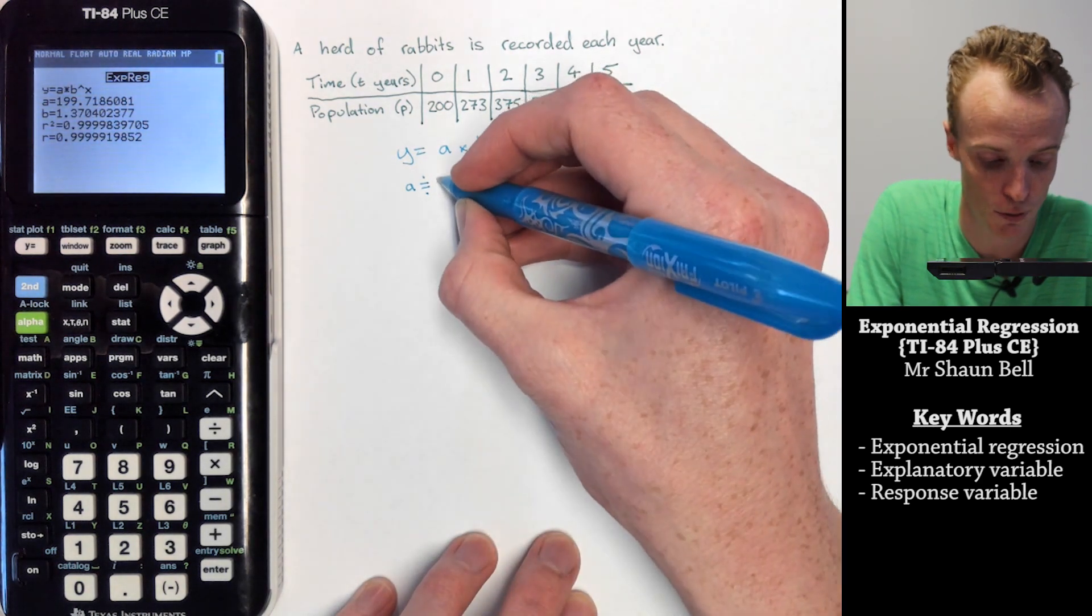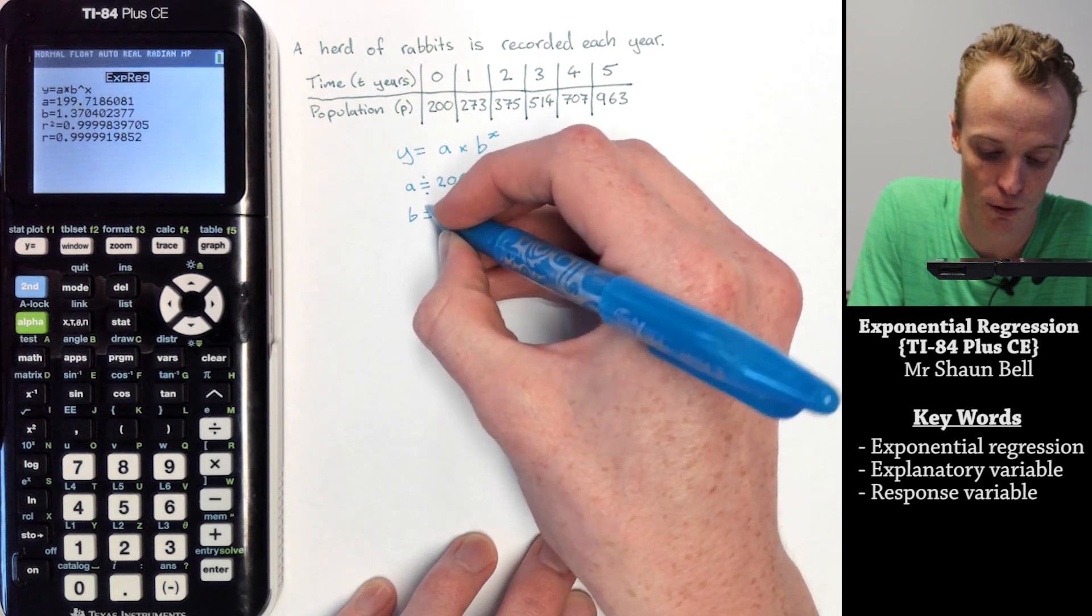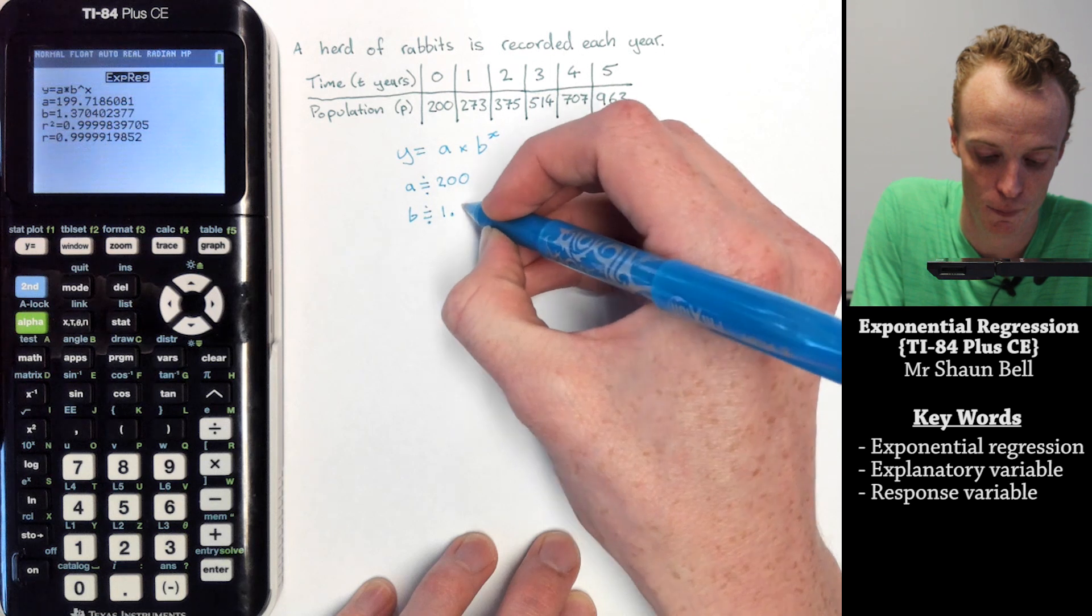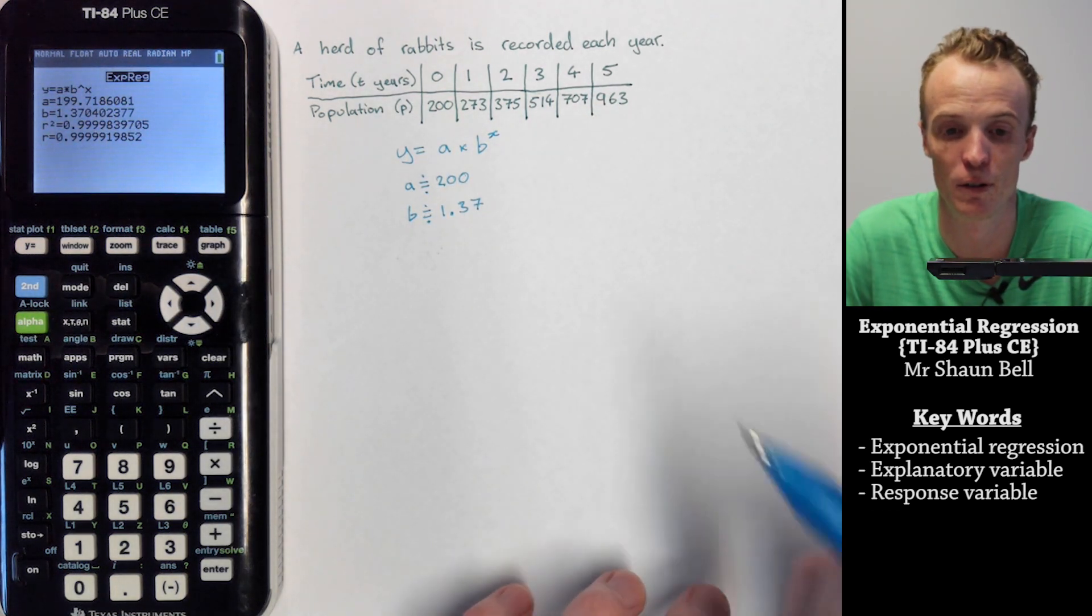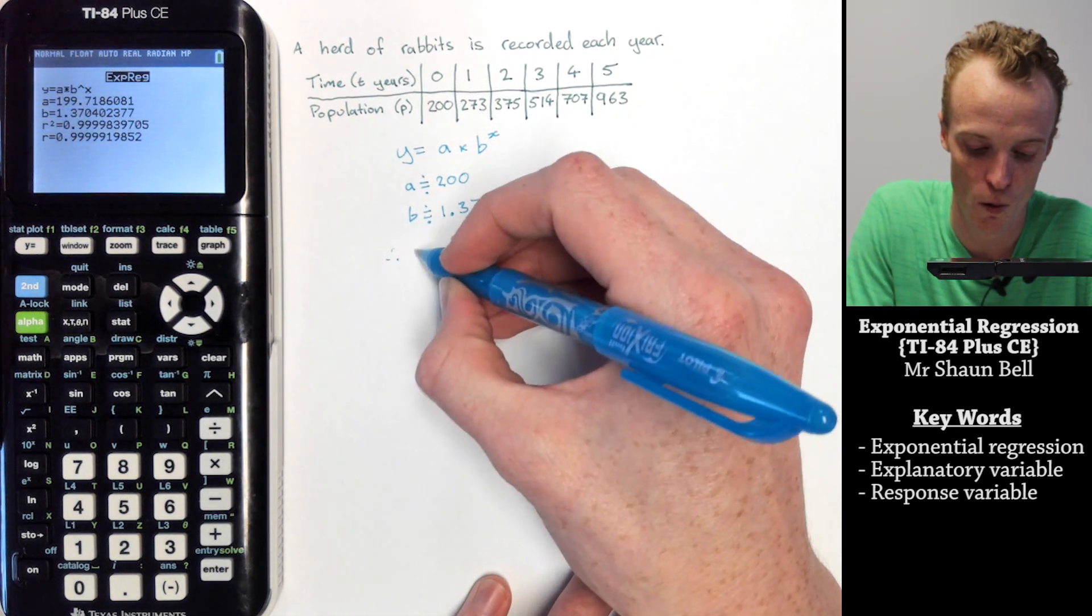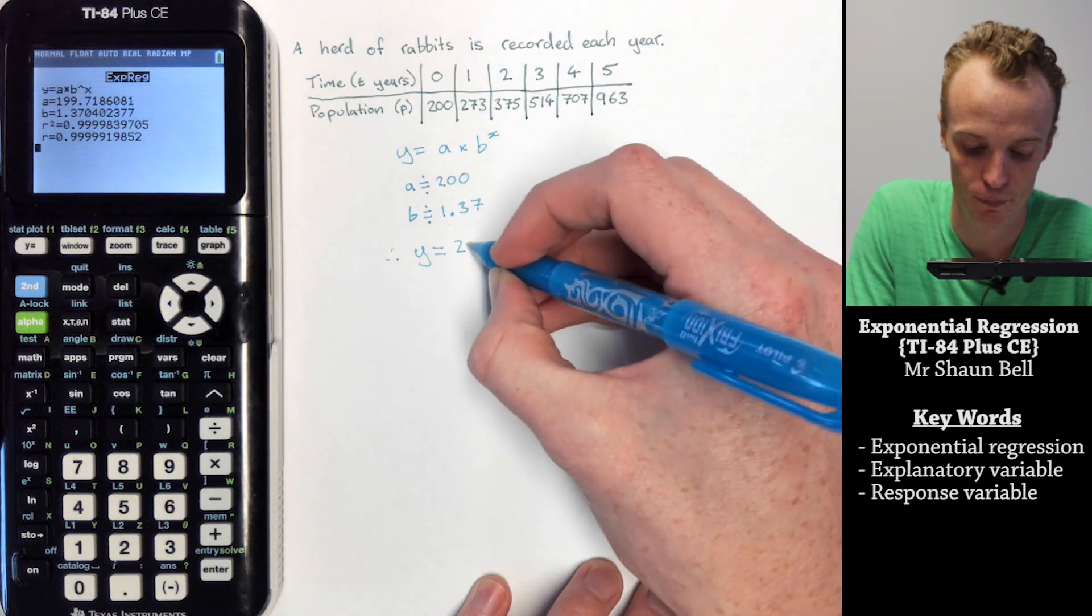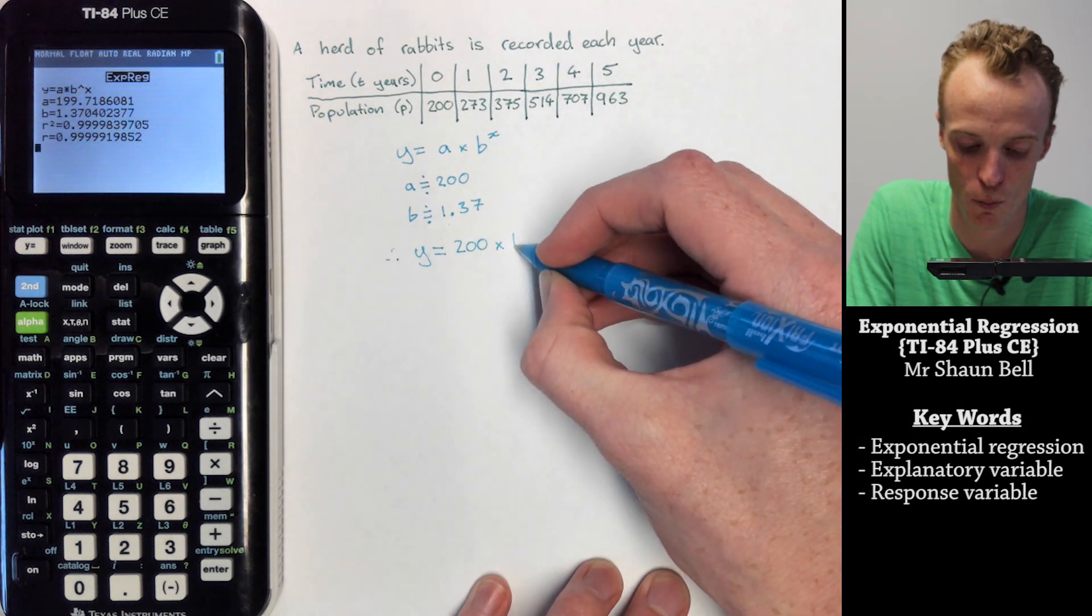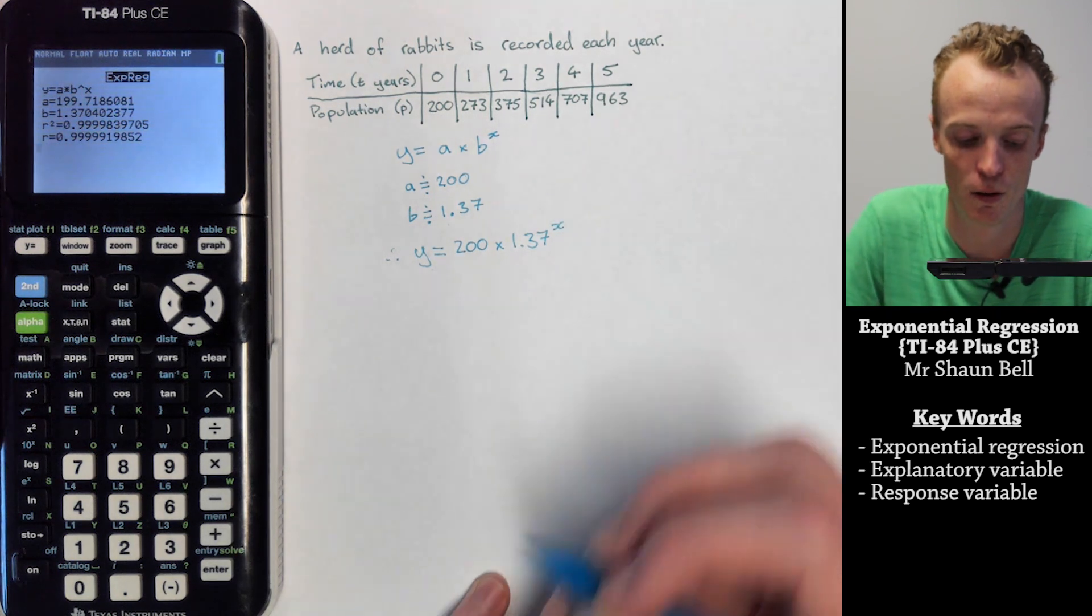And my B to three significant figures is approximately equal to 1.37. Therefore the best exponential regression model that best fits this data here is Y equals my A value of 200 multiplied by my B value of 1.37 to the power of X.